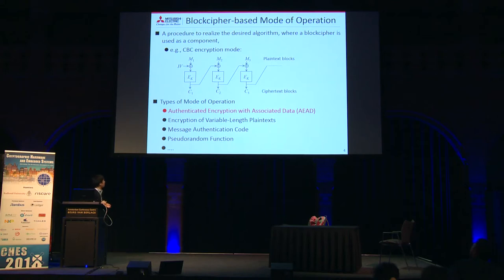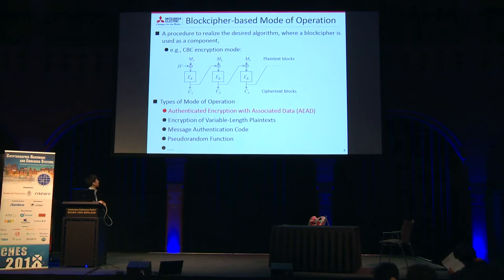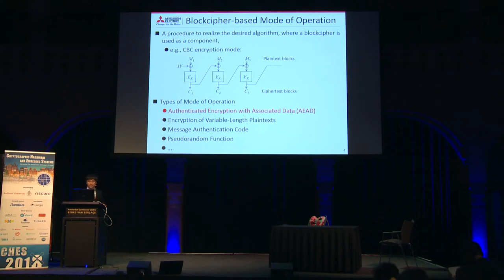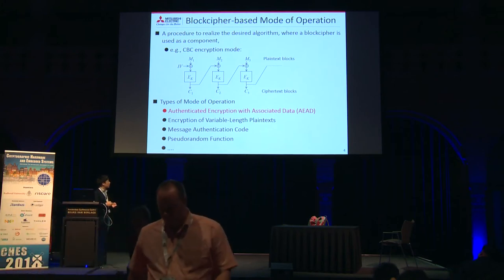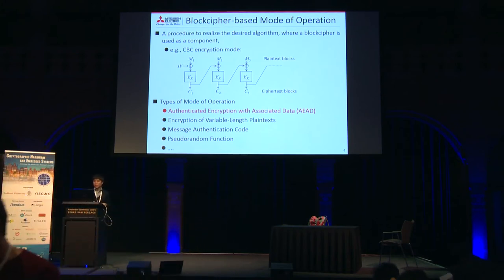Let's consider CBC encryption mode. Capital M is a plaintext block, and capital C is a ciphertext block. By iterating the keyed block cipher, variable-length plaintext blocks can be encrypted. Using a block cipher, these symmetric key algorithms can be obtained. This talk focuses on block cipher-based authenticated encryption with associated data, AEAD for short.